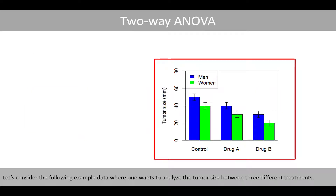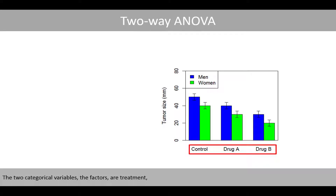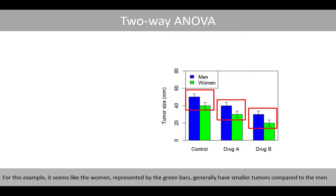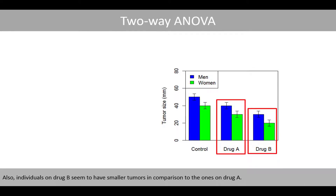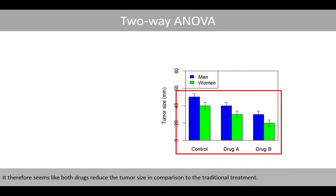Let's consider the following example data where one wants to analyze the tumor size between three different treatments. The dependent variable is tumor size, which has been measured in several independent cancer patients that had about the same tumor size before the treatment started. The two categorical variables, the factors, are treatment and gender. It seems like the women, represented by the green bars, generally have smaller tumors compared to the men. Also, individuals on drug B seem to have smaller tumors in comparison to those on drug A, and individuals on drug A have smaller tumors compared to those in the control group, which are on the traditional treatment. It therefore seems like both drugs reduce the tumor size in comparison to the traditional treatment.